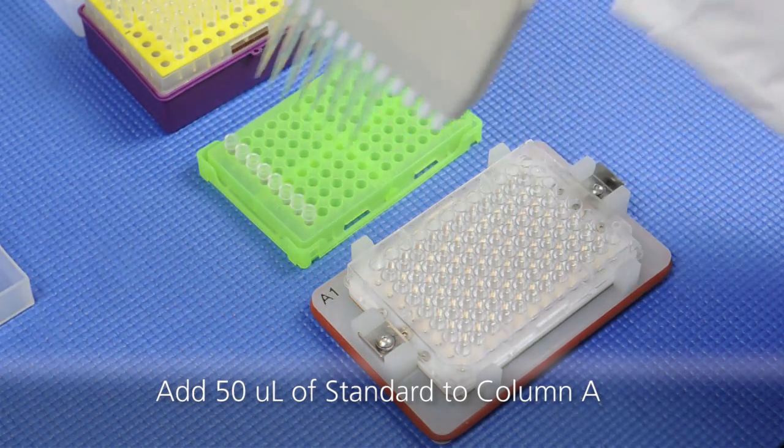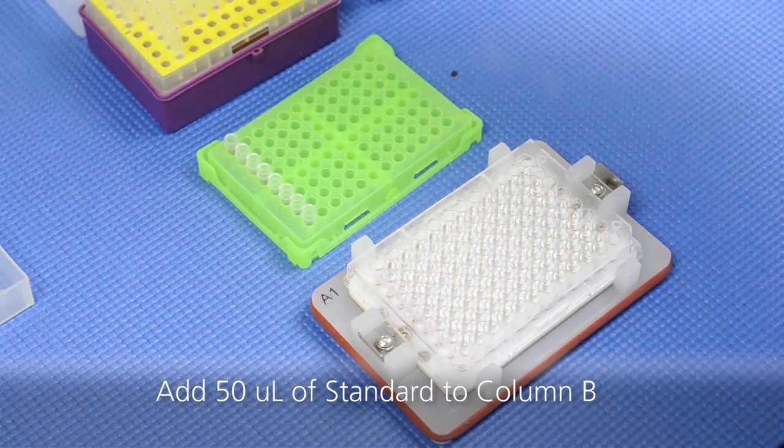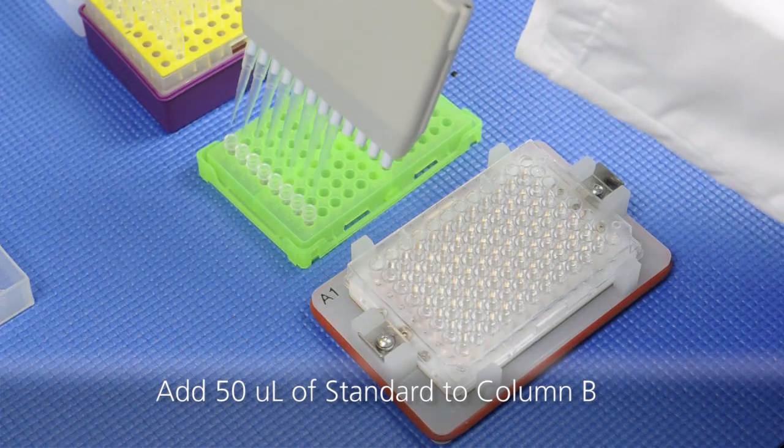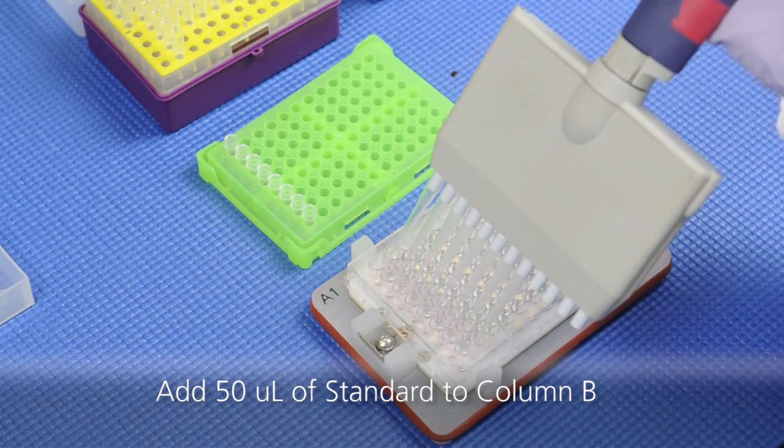Transfer 50 microliters of the standard using a multi-channel pipet into column A. Using new tips, transfer 50 microliters of the standards into column B of the microtiter plate.